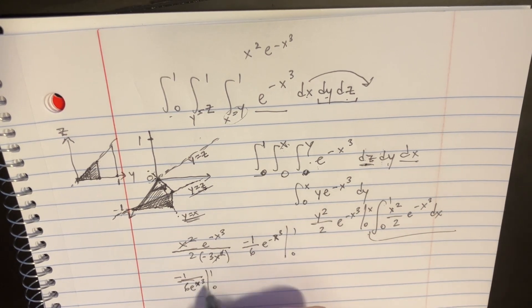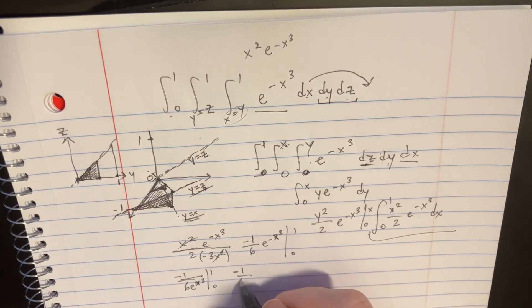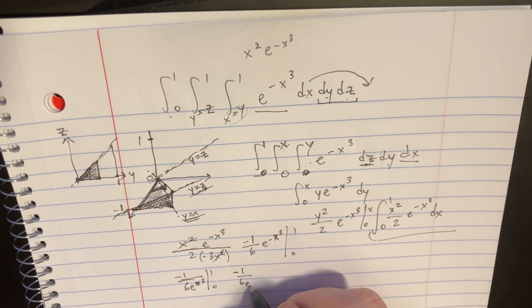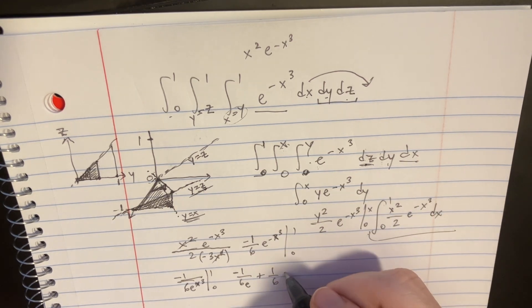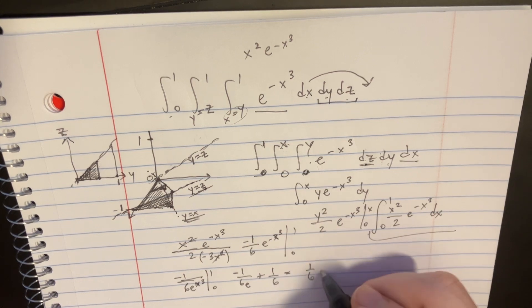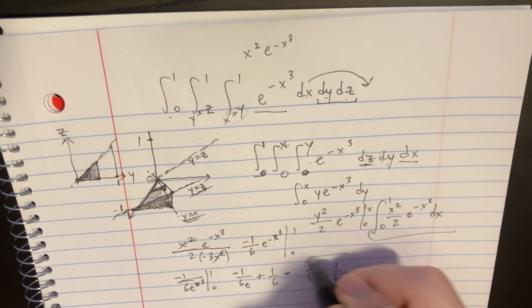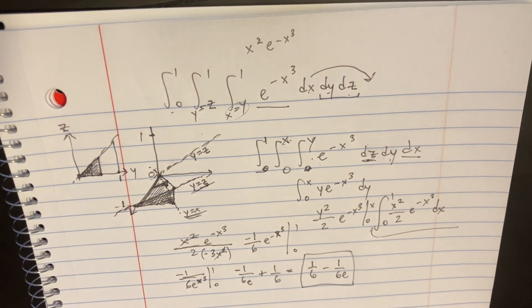So we'll just bring that from 0 to 1, which will be 1 over 6, e, and then plus 1 over 6. So that could be just rewritten as 1 over 6, minus 1 over 6, e. All right. Not too bad.